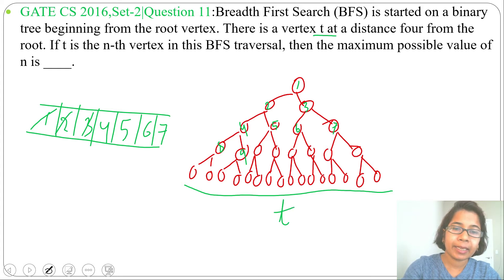If t is the nth vertex in the BFS traversal, and if we do BFS traversal, we'll write all the nodes in level order. So it's asking, if t is the nth vertex in the BFS traversal,